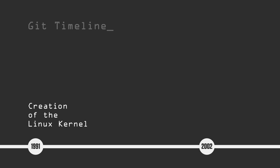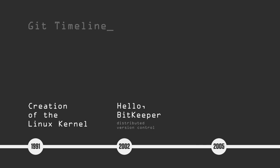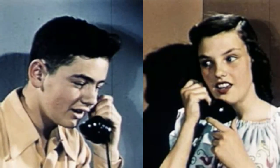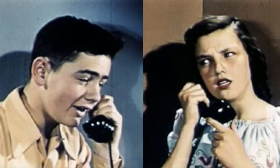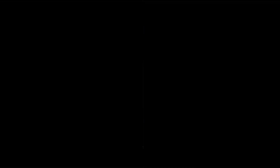In 2002, the Linux kernel began using a proprietary DCVS, or distributed version control system, called BitKeeper. In 2005, the relationship between the community that developed the Linux kernel and the commercial company that developed BitKeeper broke down, and the tool's free of charge status was revoked.